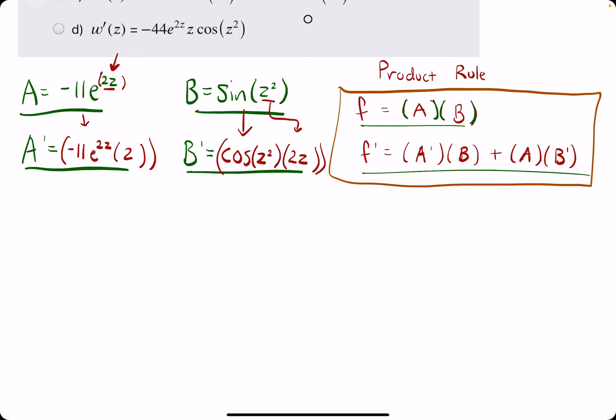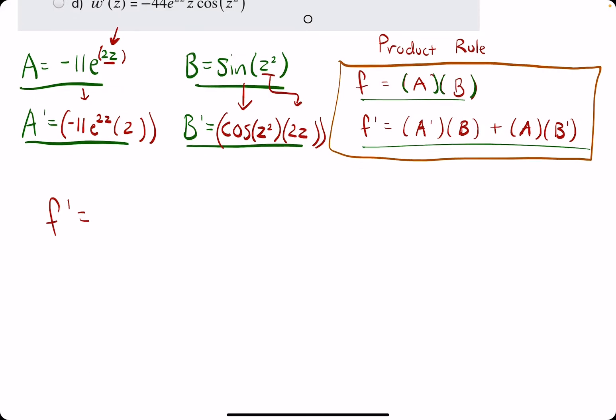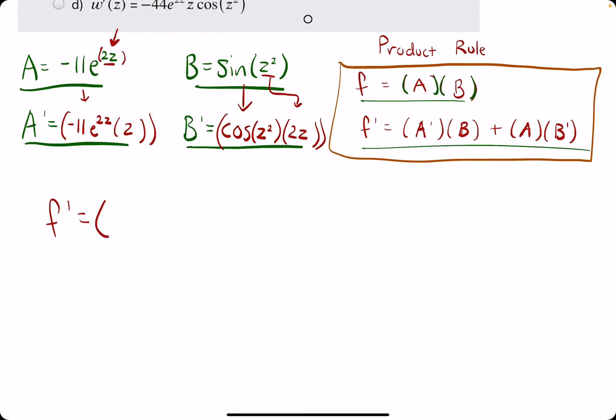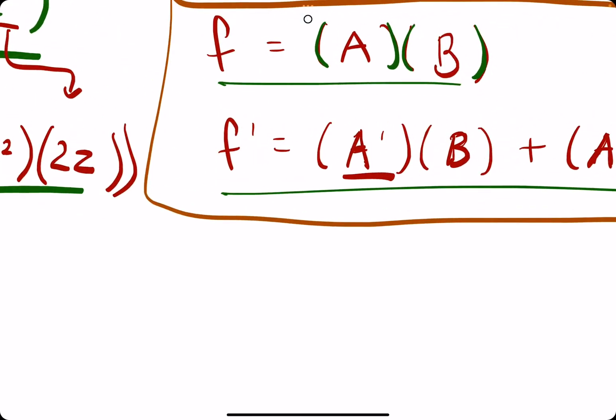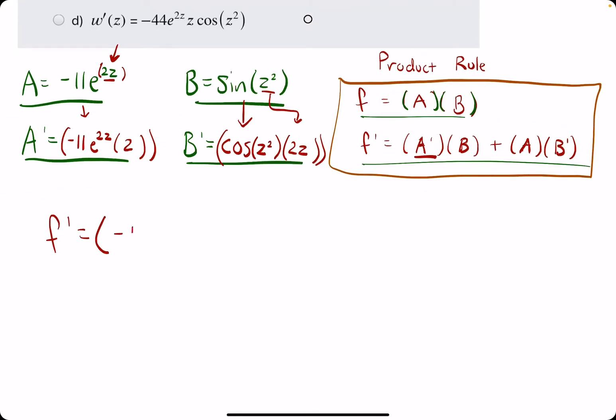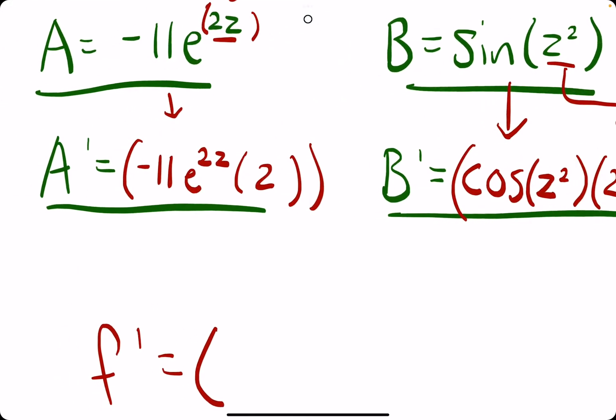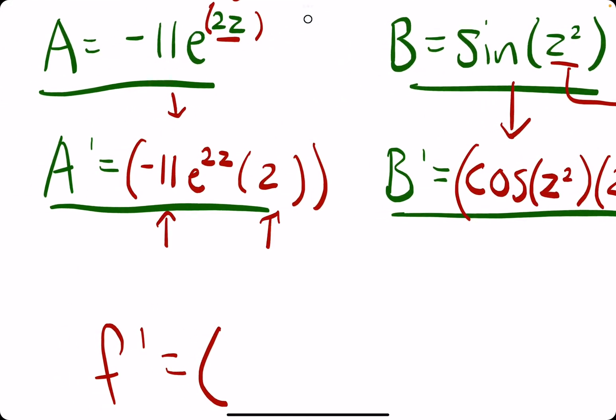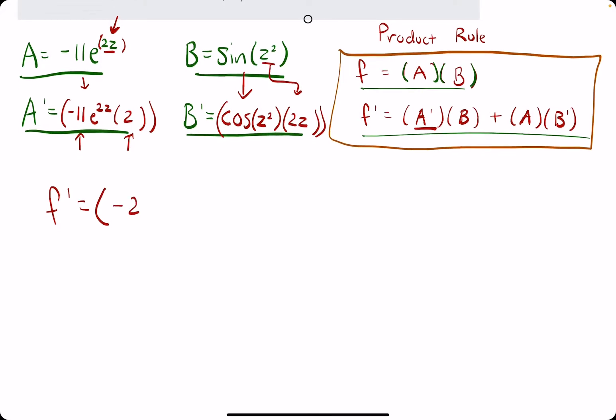We always start product rule, or something called quotient rule that we'll cover next, with A prime. A prime is always the start. So, negative 11, actually, you know what, I'll go ahead and multiply this negative 11 and this 2, to get negative 22E to the 2Z. That's A prime.